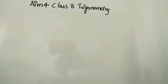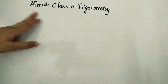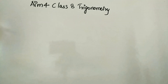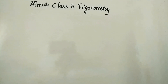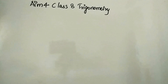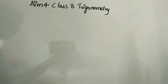Hi everyone, welcome to Vishwa Abloom. In this video we will be looking at aim 4 of trigonometric classes, that is trigonometric identities. We have 3 identities in this chapter and some useful formulae also in this aim. Let's start with the challenges — a very simple aim.